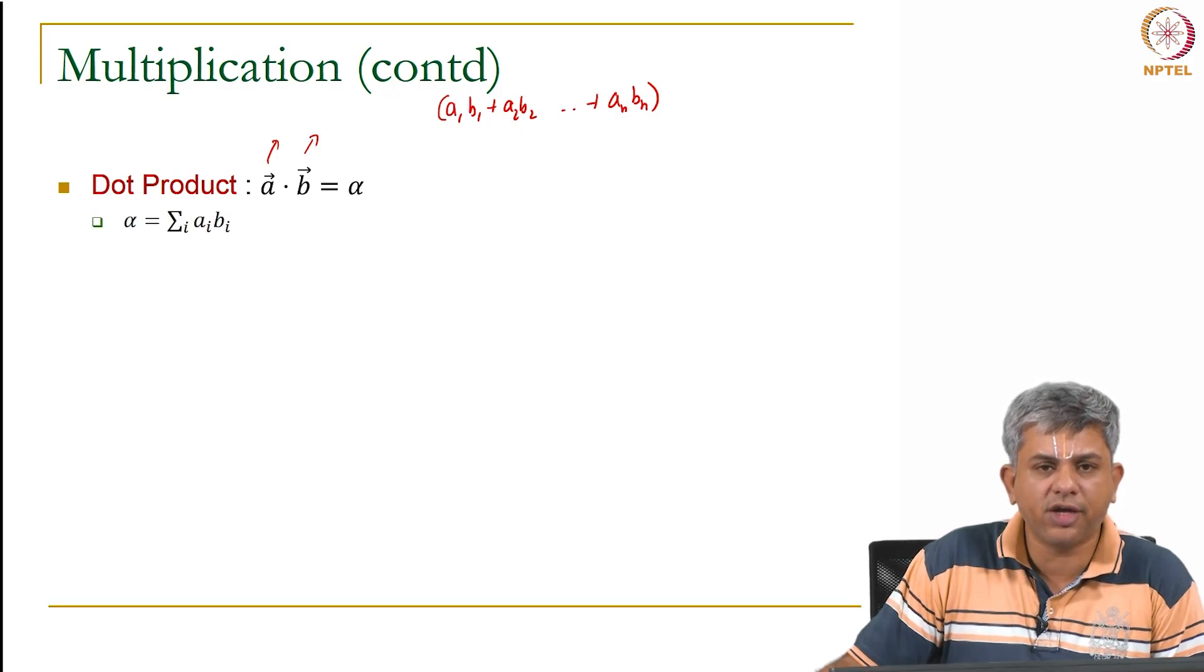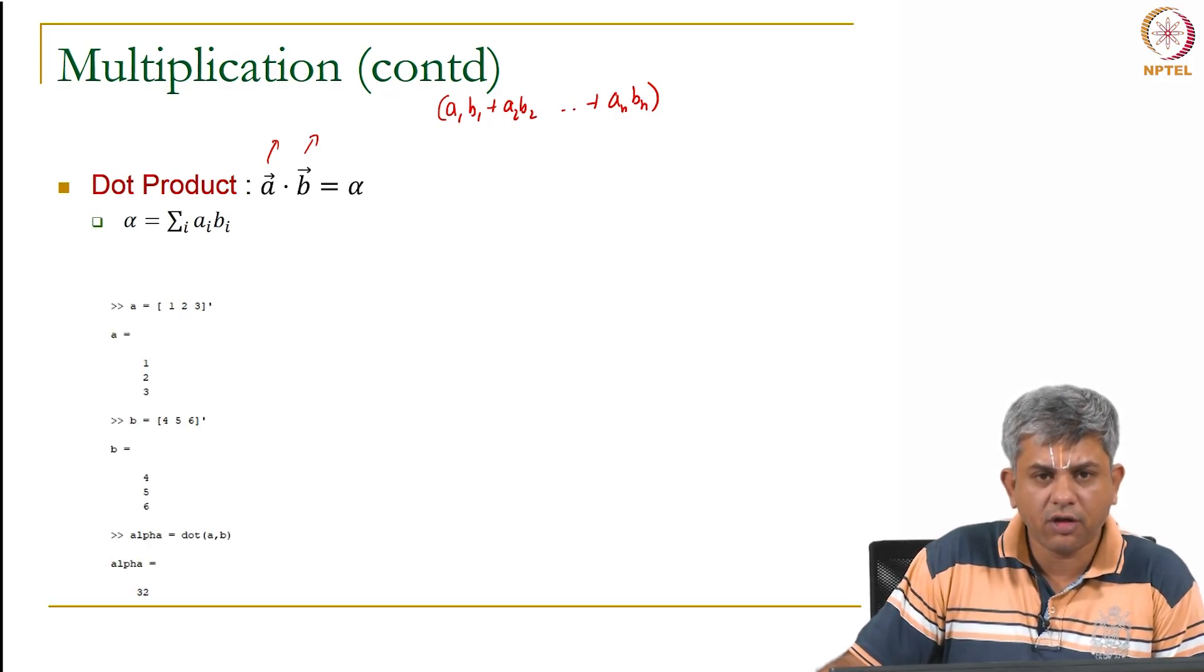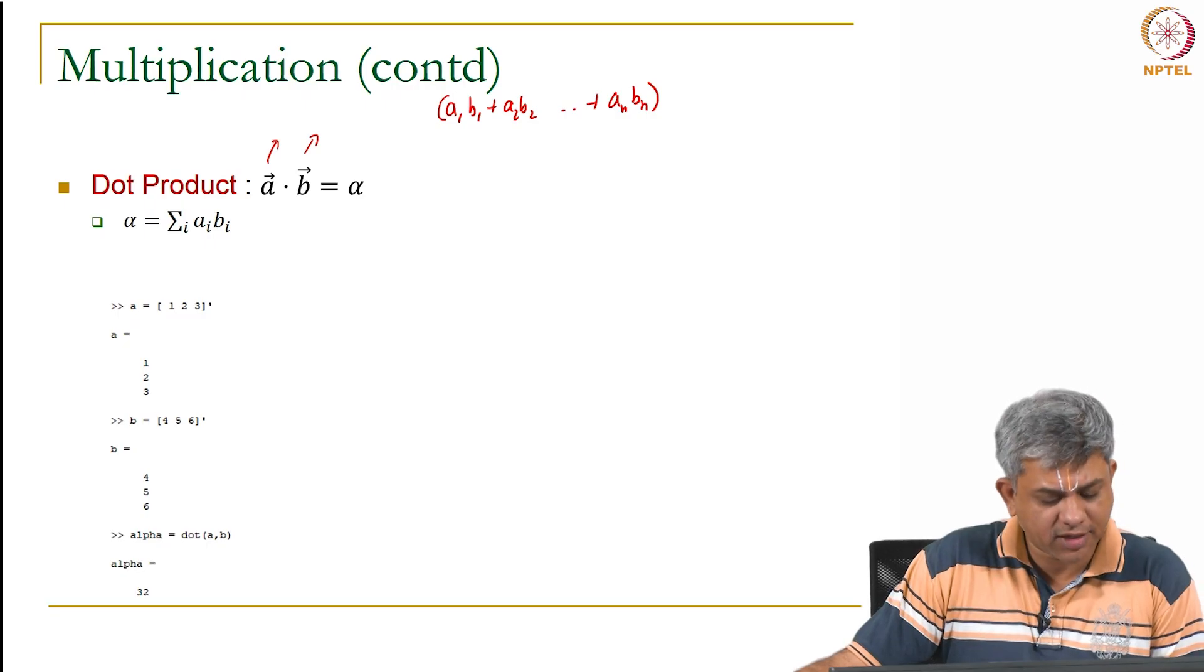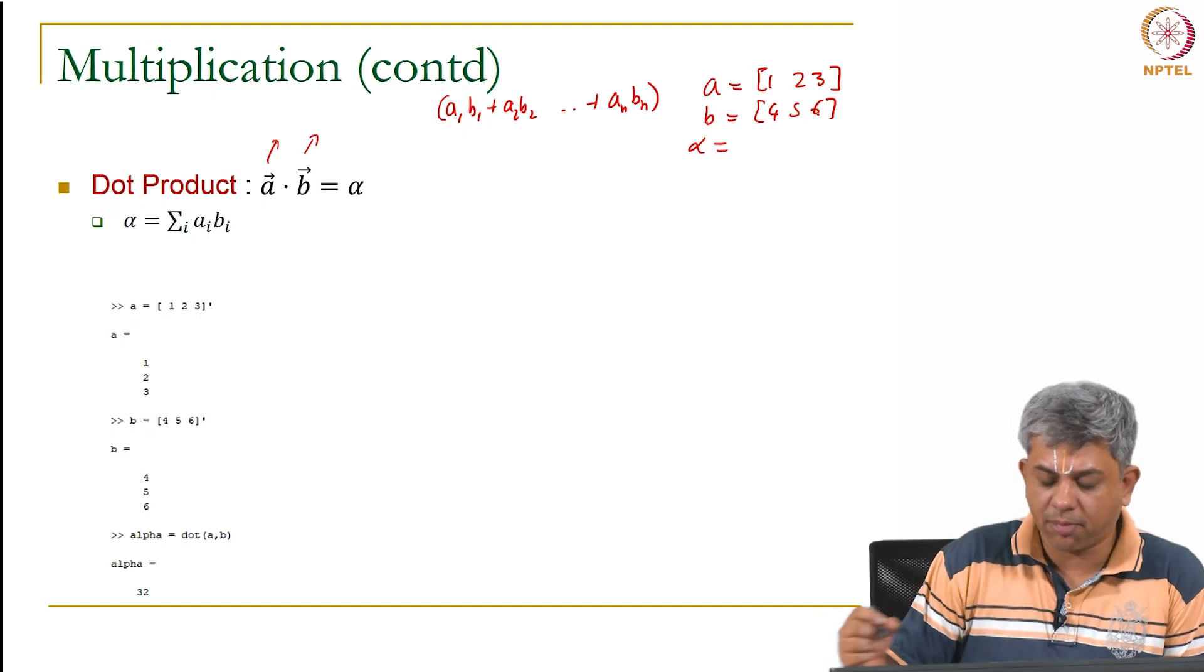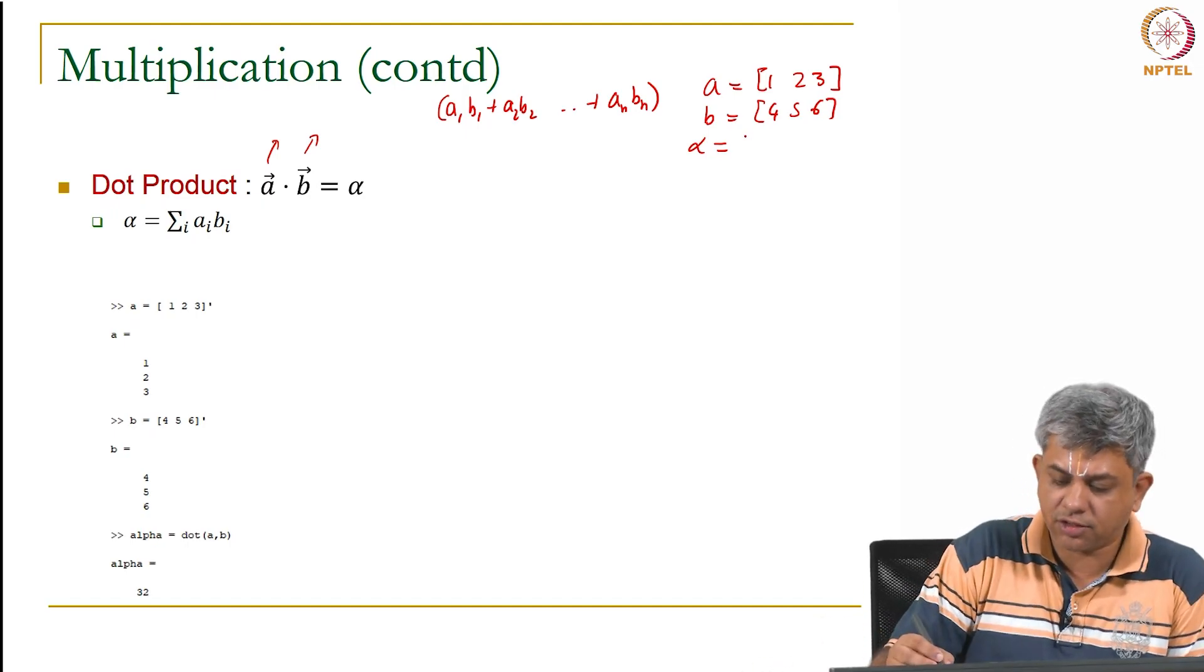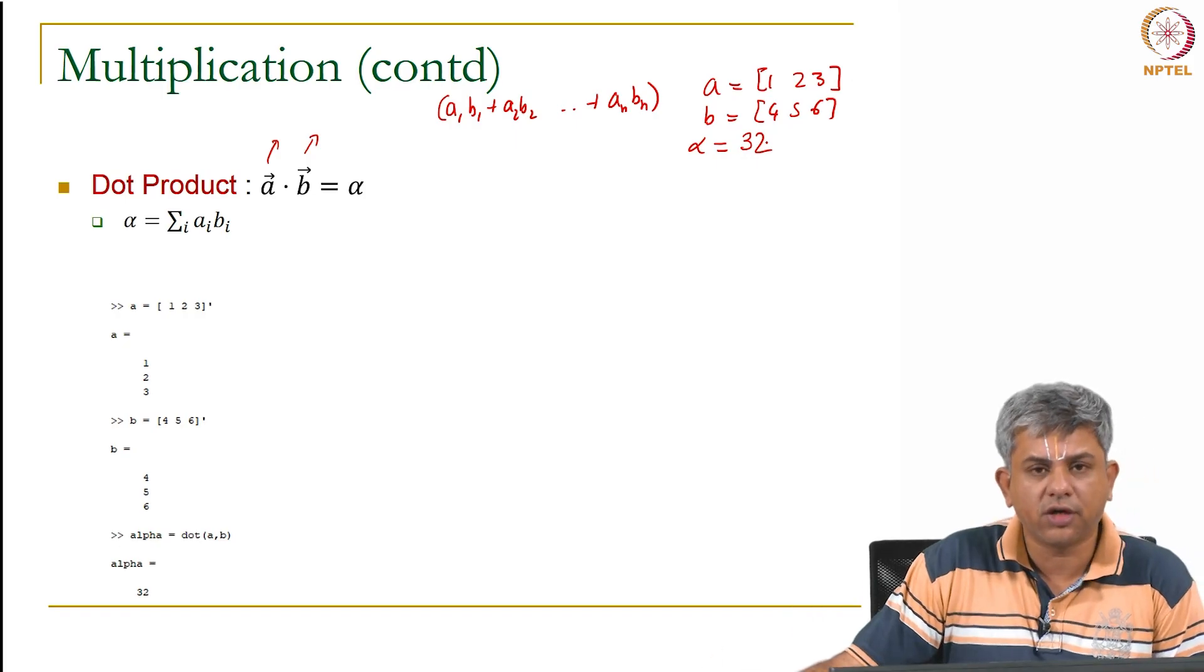What is more important here is, one example is given there. If A is 1, 2, 3 and B is 4, 5, 6, then alpha the dot product is 4 plus 10 plus 18 which gives you 32.